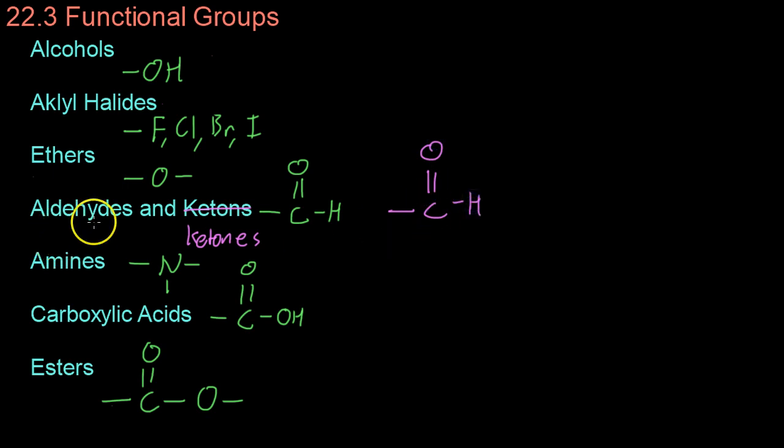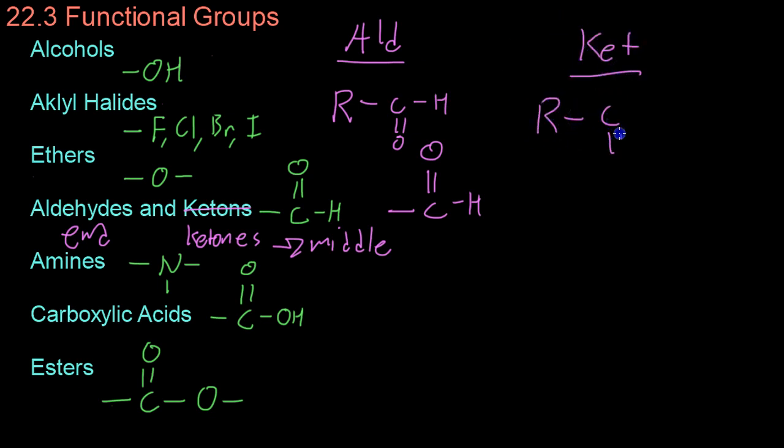However, the difference is that aldehydes have this group on the end, and ketones have them somewhere in the middle. So, for example, aldehydes will have the formula R-C, like so, whereas ketones will have the formula R-C-R prime. Ketones are like ethers in that they can connect to organic compounds using their functional group, whereas aldehydes, though they use the same group, have different properties because this functional group is on the end of the molecule.